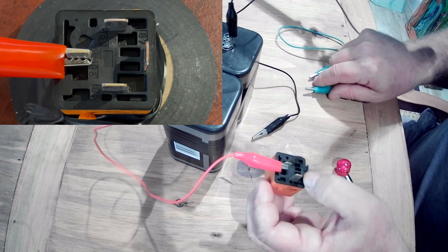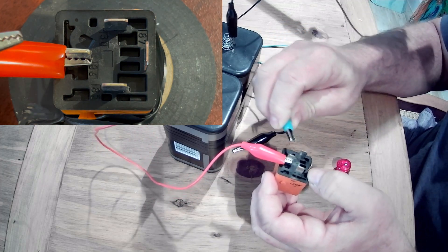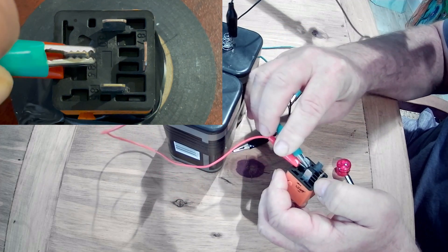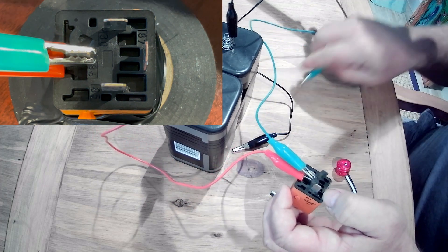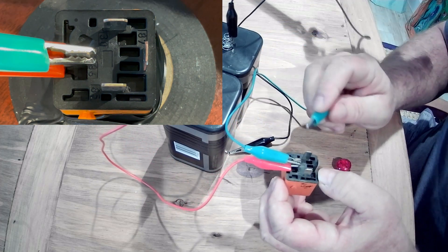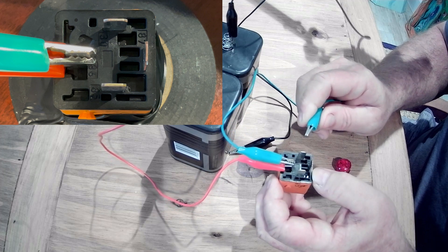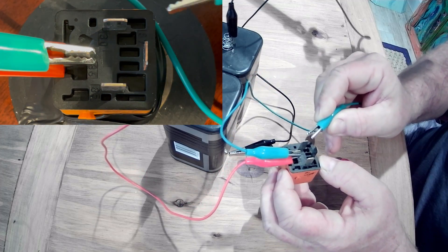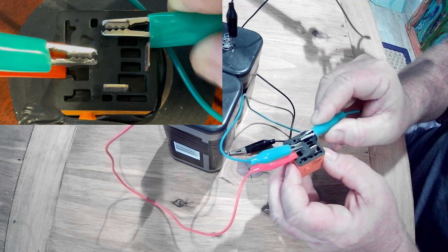The next thing we want to do is we want to jump from the positive terminal on the relay over to the positive side of the switch like that.